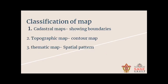Then come to the next: the classification of maps. We have classified maps into three categories. The first one is a cadastral map, the second one is a topographic map, and the third one is a thematic map. A cadastral map always shows boundaries. The word 'cadastral' comes from the French word 'cadastre', meaning a register of territorial properties. So a cadastral map shows boundaries and ownership of land.